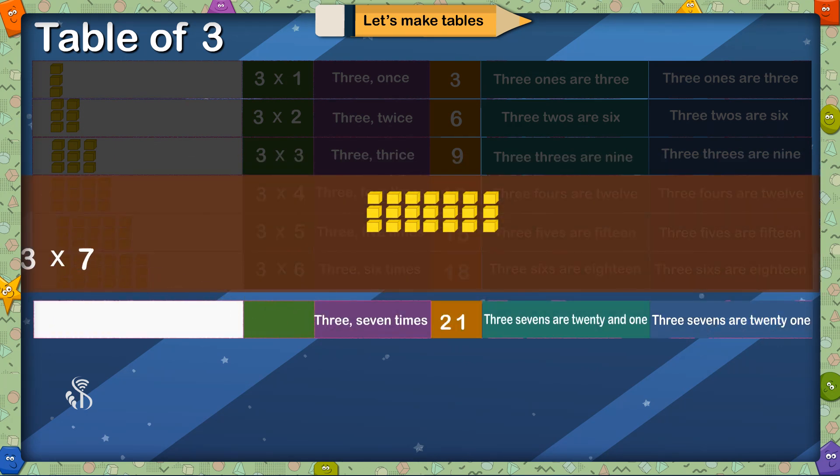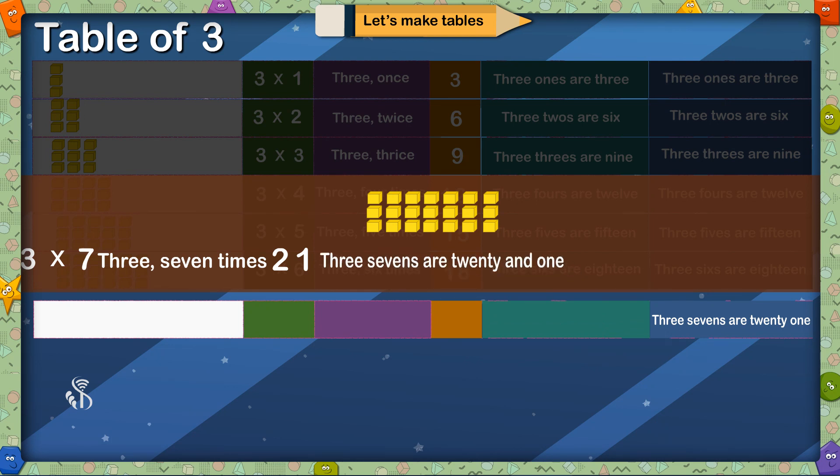3 multiplied by 7, 3 7 times is 21, 3 7s are 20 and 1, 3 7s are 21.